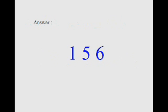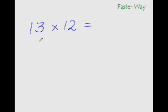So, let us take out the faster way of doing it. In order to multiply 13 with 12 quickly, all you need to do is add this digit to this entire number. So, 2 plus 13 is 15 and you have the first two digits of your answer.